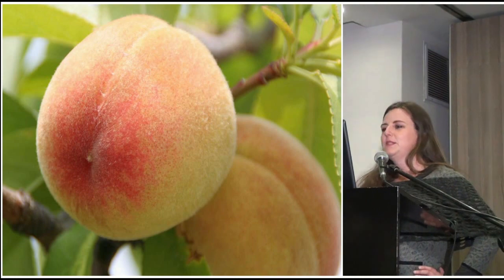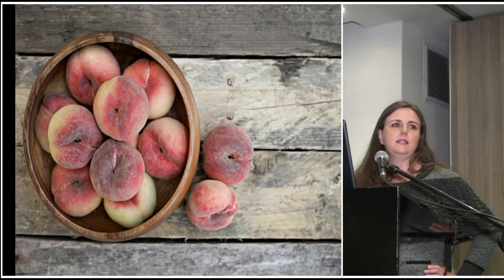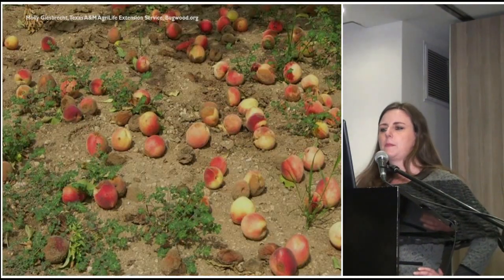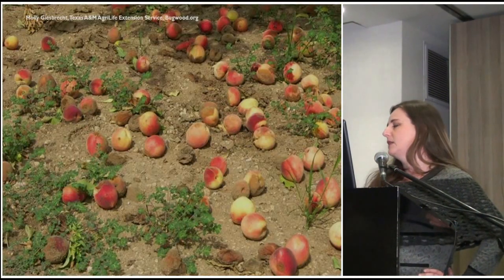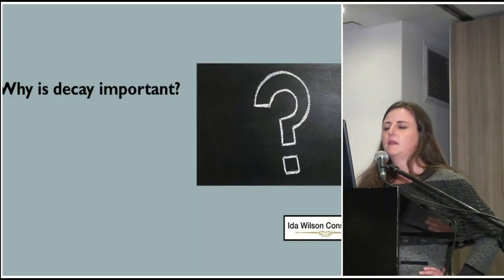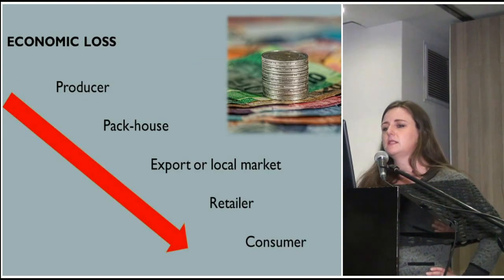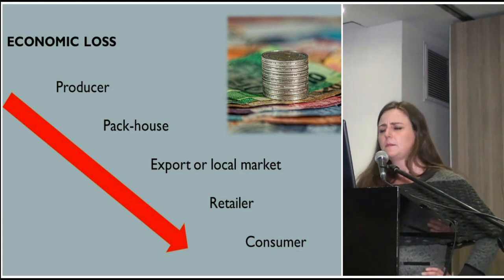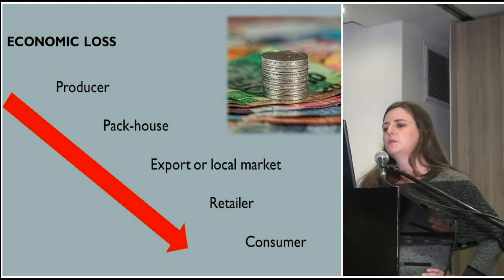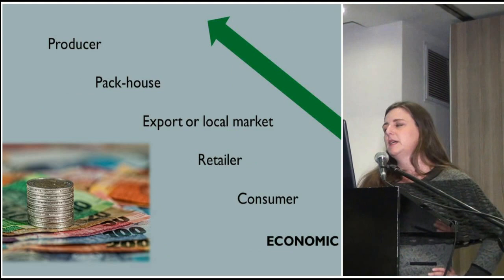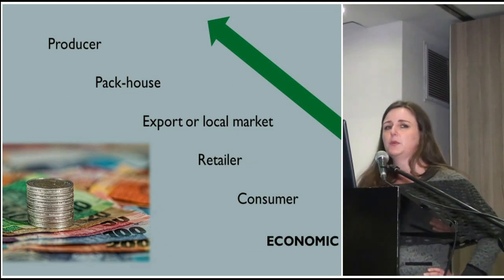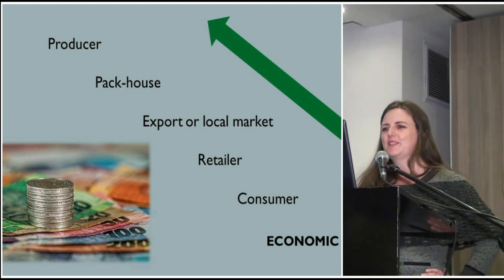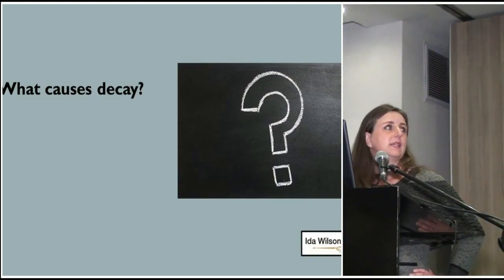Stone fruit — it's peaches, nectarines and plums. Ideally we would like this fruit to reach our consumers in a perfectly healthy, edible and nutritional state. But unfortunately that is not the reality. We have to deal with losses due to decay. Decay is important because it results in economic loss, and this is right through the production chain — from the producer through to the packhouse, the export to the local market, the retailer and the consumer. So the management of decay is very important, and we can have economic gain if we manage decay successfully.